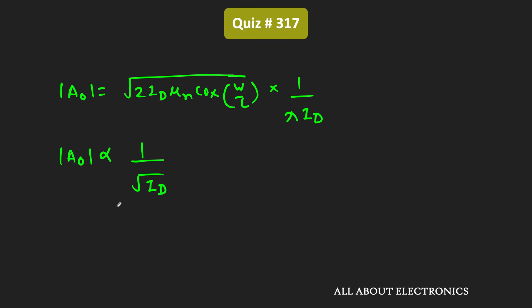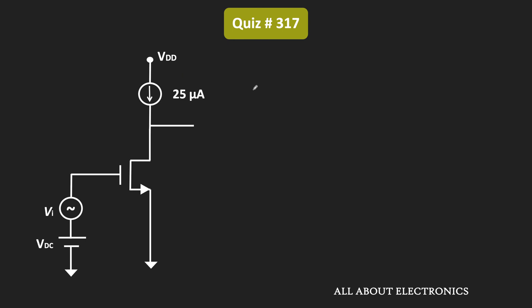So let's say whenever the bias current is equal to 100 microampere, then this intrinsic gain is equal to A01 and at that time, this bias current is equal to Id1. And whenever this bias current becomes 25 microampere, then let's say this intrinsic gain is equal to A02. So we can say that this A02 divided by A01